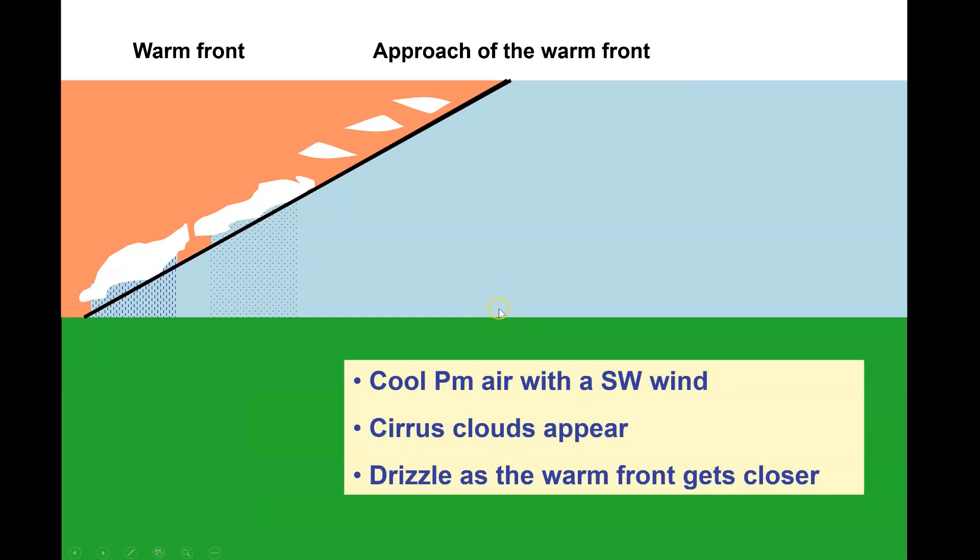As we're standing here, the first thing that we're experiencing in terms of weather is the cool PM air. It's coming from the southwest, but overhead the first hint that a front is approaching and a depression is coming is some cirrus clouds, high wispy clouds overhead. As the front gets closer, the clouds get lower and slightly more dense, and then you will get some drizzle forming.